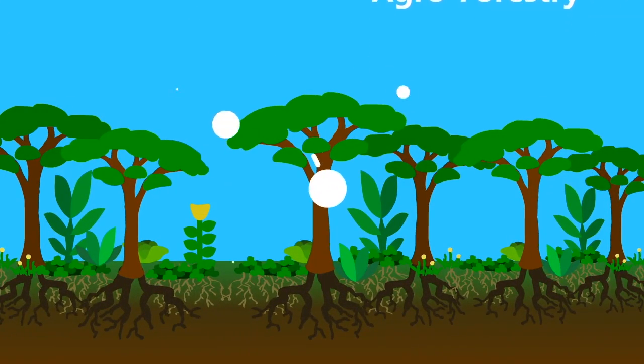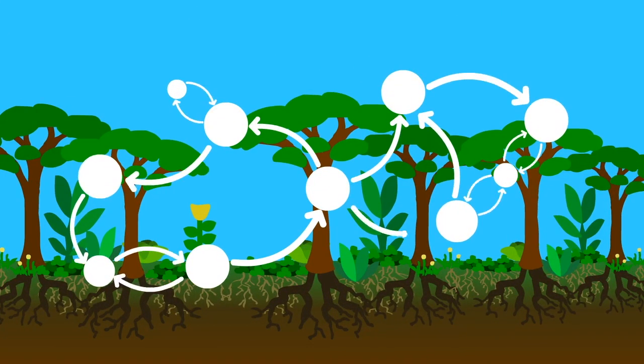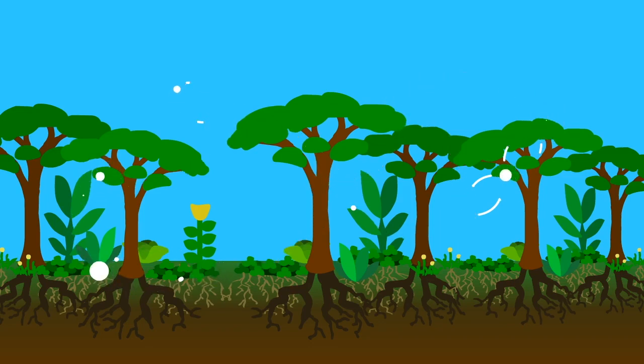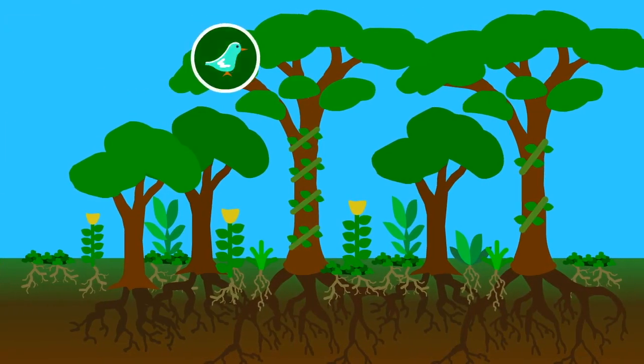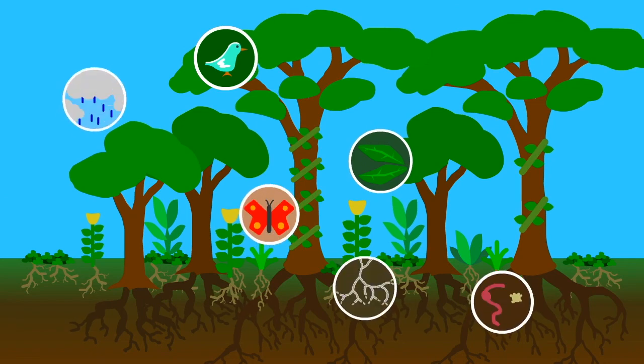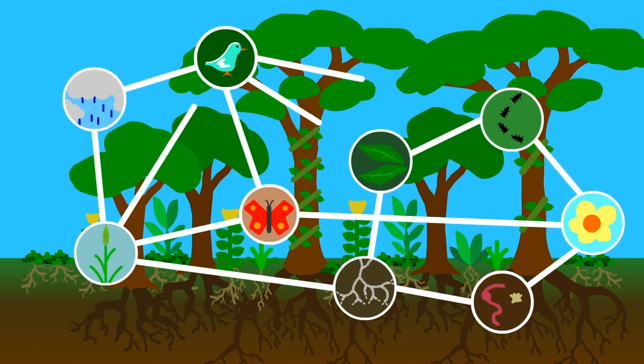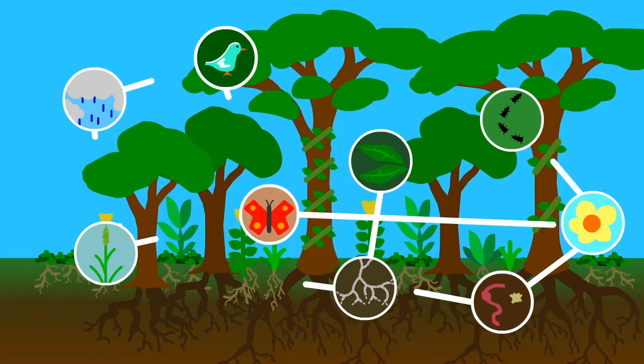This is one of the most complex and location-dependent practices there are. I will therefore be overgeneralizing a bit. It always starts with observing a local forest and the relationships between everything in it: the plants, the animals, the fungi, the landscape, the soil, the water.